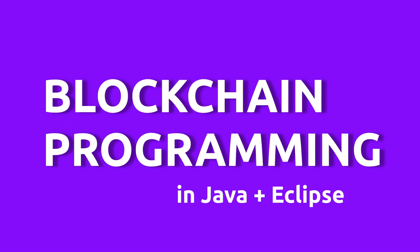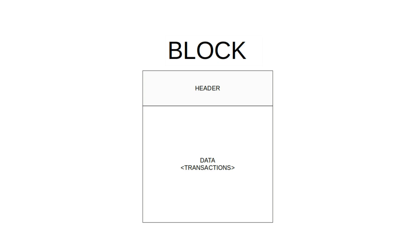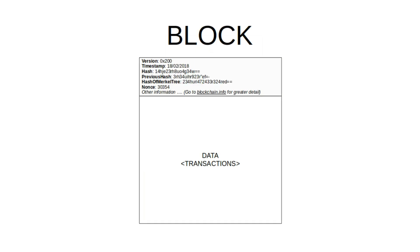First, let's take a look at what a block actually looks like. A block can be split into two sections: some header information and some data information. The header information contains specific information about the block and previous blocks, and the data section contains information such as transactions, but this isn't always the case.